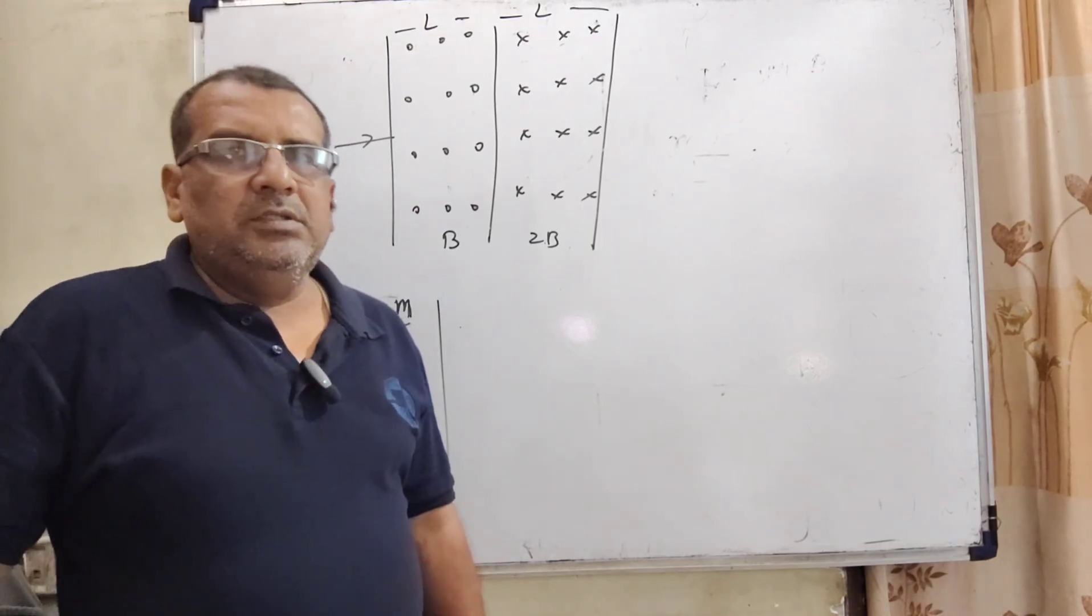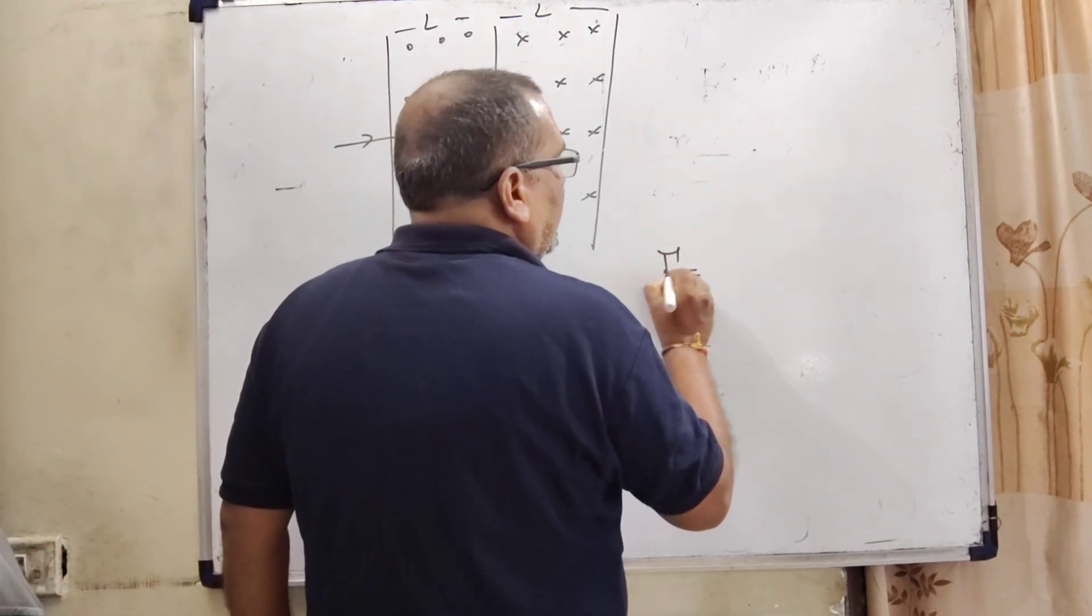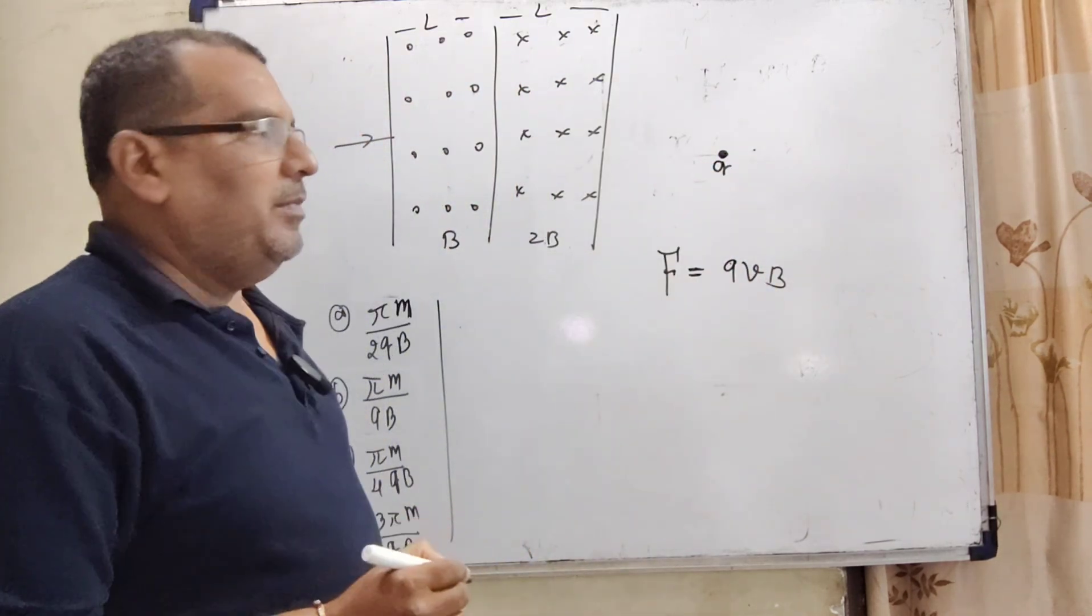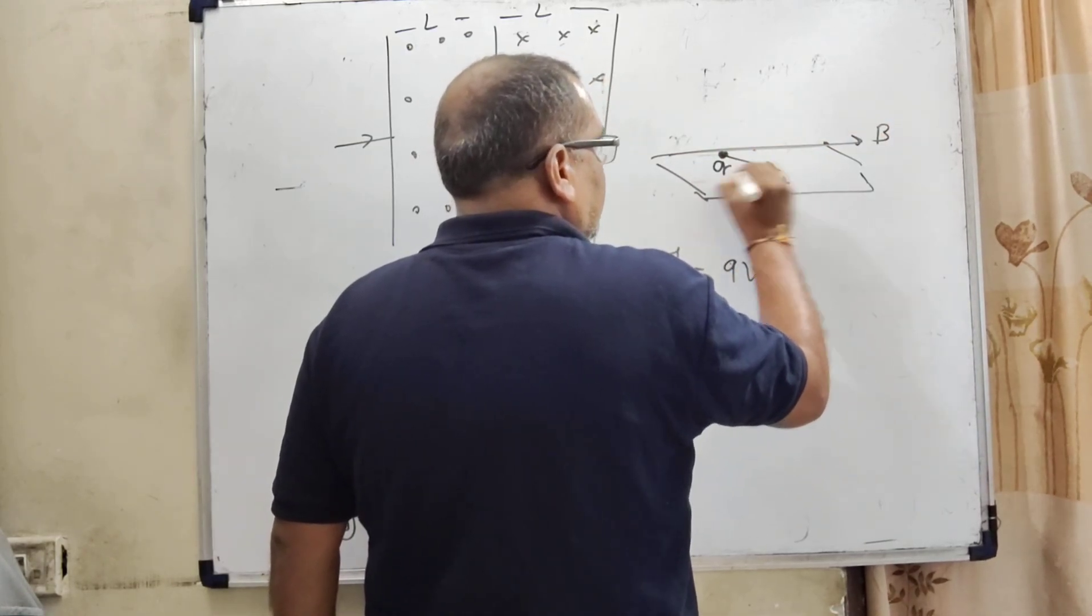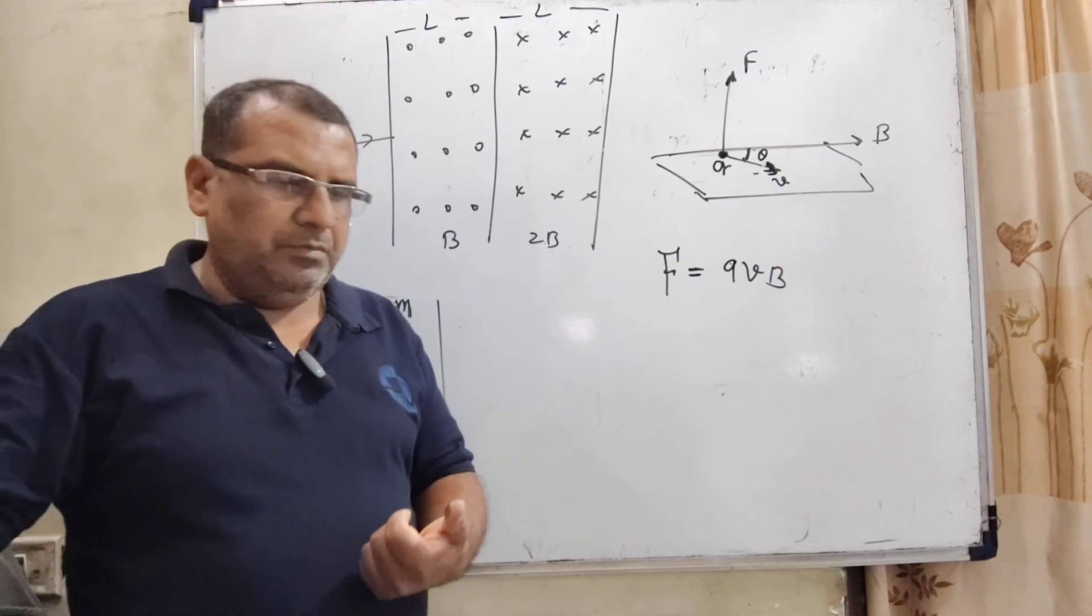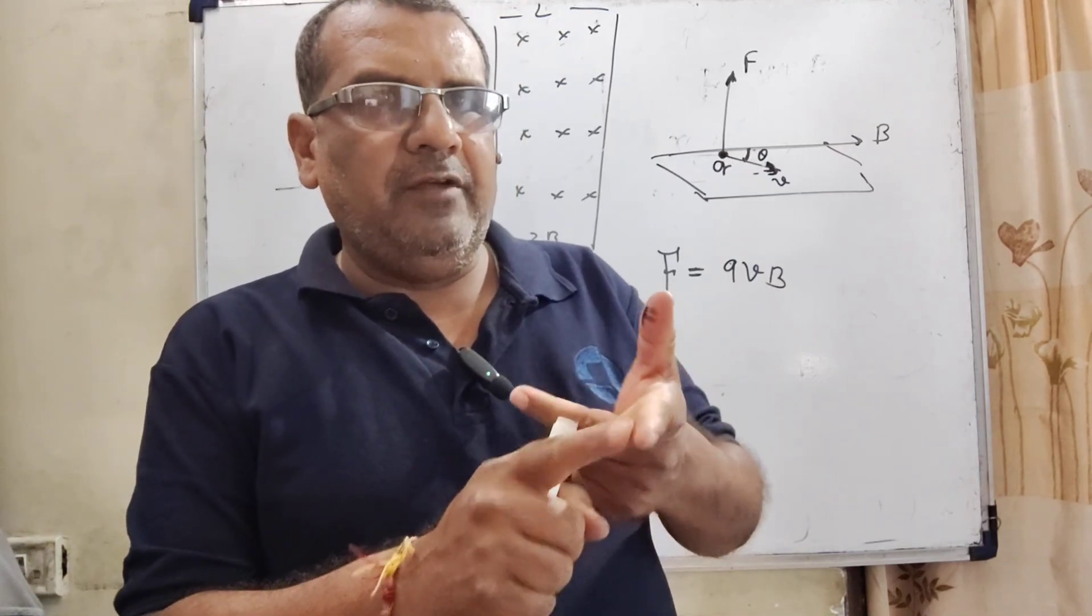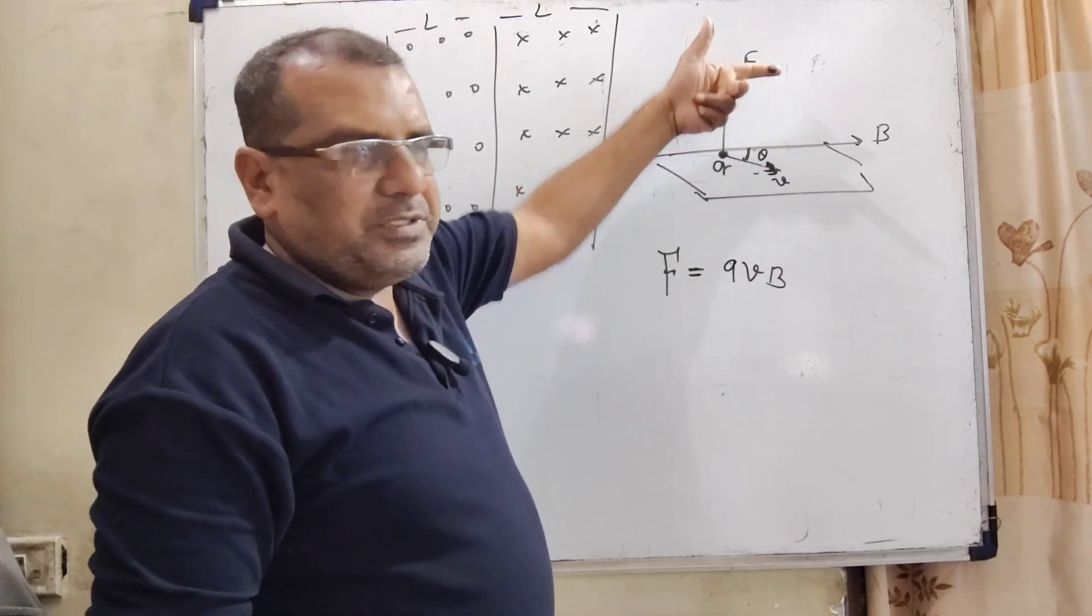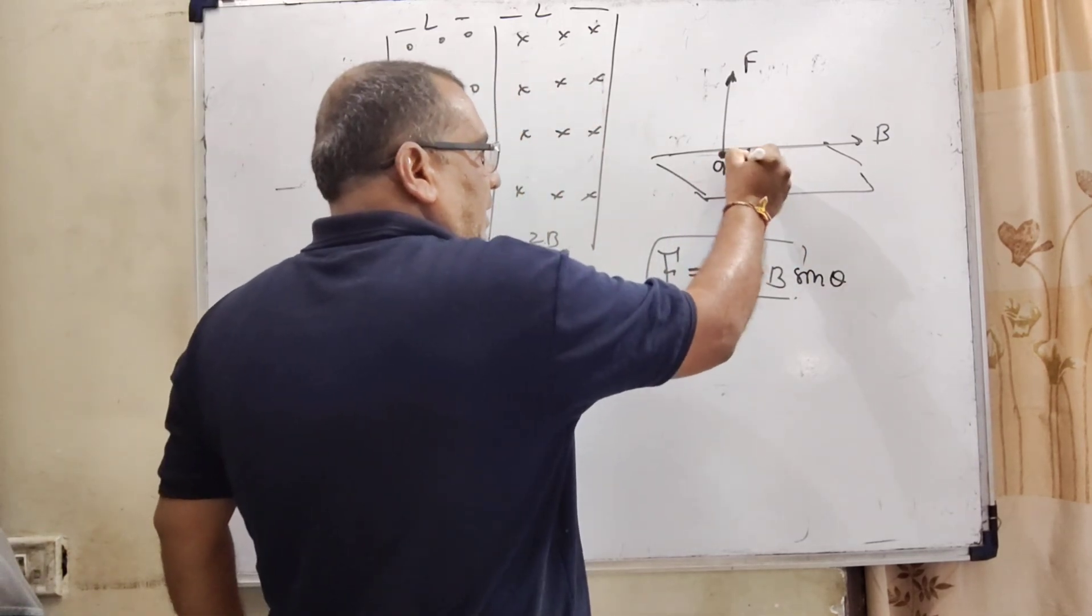This question is based on the charge particle moving in uniform magnetic field. So here, as we know that the force is applied, f is equal to q vb sine theta. When a charge particle q is moving in uniform magnetic field, suppose this is the plane, here the direction of magnetic field and this is velocity of the charge particle making angle theta. Then force is exerted upside by using Fleming's left-hand rule. Here, suppose this thumb shows the force and this index finger shows the magnetic field and this is the velocity middle finger. So here, suppose magnetic field in this direction, velocity in this direction and thumb upside, so the force is exerted to upside.